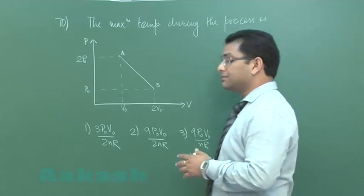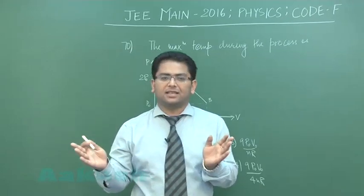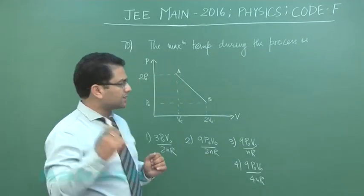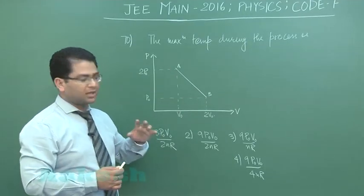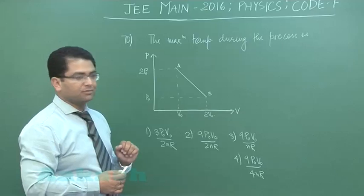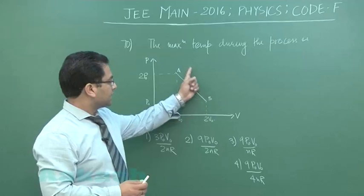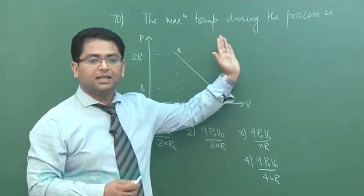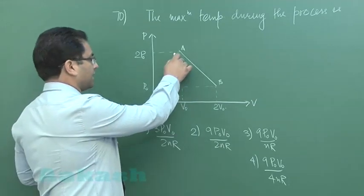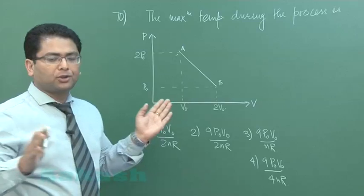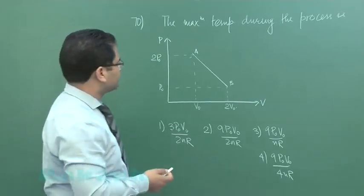During the whole process we require maximum temperature of the gas. Right from A to B at different stages the temperature would be different. Here and here the temperature would be same because the product of pressure and volume is same. You can imagine an isotherm which would intersect in this way. The next one would go here - the higher isotherm means there are temperatures which are higher than at A than that at B.